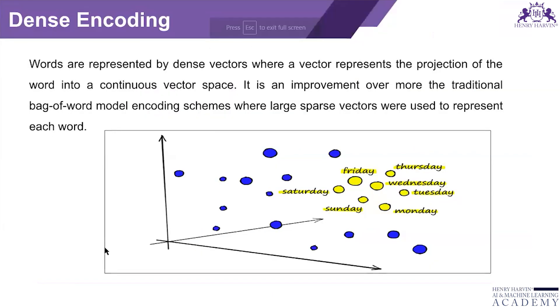In this technique, words are represented by dense vectors where a vector represents the projection of the word into a continuous vector space. It is an improvement over the traditional bag-of-words model. This is another technique which can remove the disadvantages of bag-of-words model.